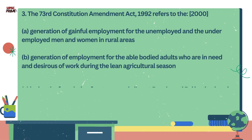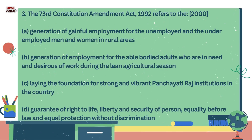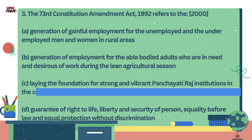Question number 3. The 73rd Constitution Amendment Act 1992 refers to: A. Generation of gainful employment for the unemployed and the underemployed men and women in rural areas. B. Generation of employment for the able-bodied adults who are in need and desirous of work during the lean agriculture season. C. Laying the foundation for a strong and vibrant Panchayati Raj system in the country. D. Guarantee of right to life, liberty and security of a person, equality before law and equal protection without discrimination. The correct answer is C.